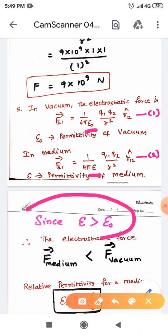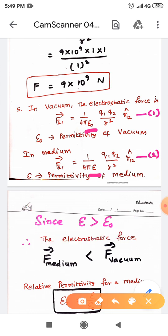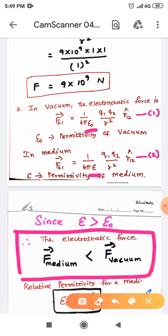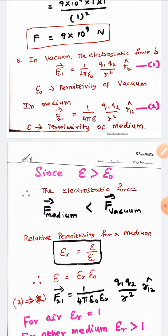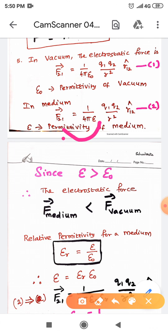The epsilon value is always greater than epsilon naught, so the electrostatic force in a medium is always less than the electrostatic force in vacuum. This is because epsilon and force are inversely proportional to each other — whenever the epsilon value increases, the electrostatic force decreases.